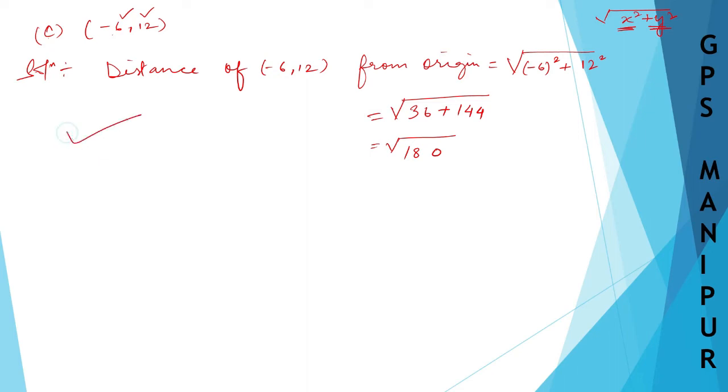So, let us find the factors for 180. 2, 90... 2, 45... 3, 15... 3, 5.